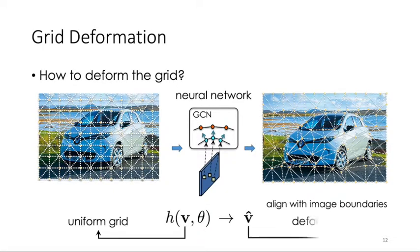The network takes in the position of vertex in the initial and uniform grid and predicts its new position in the deformed grid.